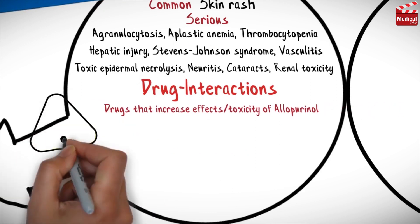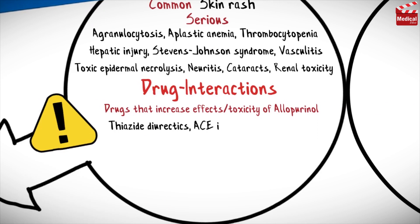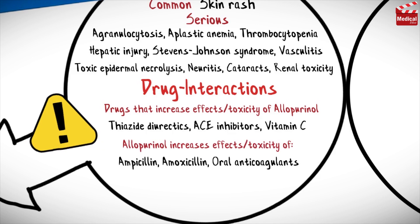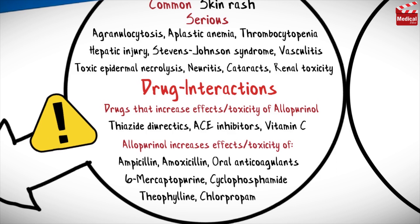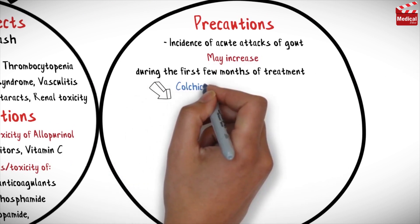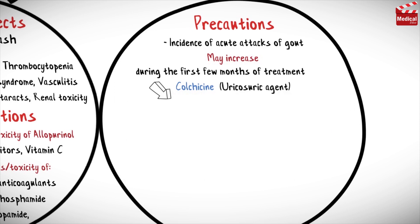There are also clinically important drug interactions. Drugs that increase the effects or toxicity of allopurinol include thiazide diuretics, ACE inhibitors, and vitamin C. Allopurinol increases the effects or toxicity of ampicillin, amoxicillin, oral anticoagulants, 6-mercaptopurine, cyclophosphamide, theophylline, chlorpropamide, and alcohol. Because the incidence of acute gout attacks may increase during the first few months of treatment, colchicine or a non-steroidal anti-inflammatory drug should be added to the regimen as a prophylactic measure.